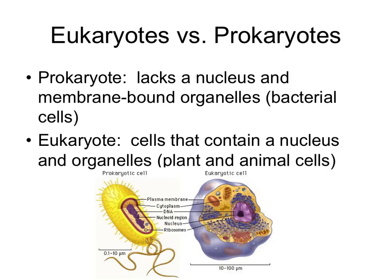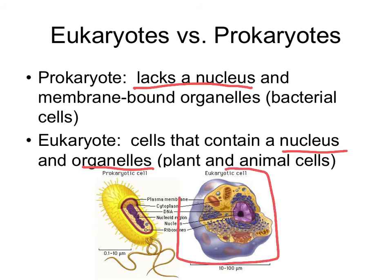Now we transition to eukaryotes. Prokaryotes like bacteria lack a nucleus and do not have membrane-bound organelles, making them a much simpler cell. Eukaryotes, on the other hand, have a nucleus and organelles. Inside a eukaryotic cell, there are a lot more structures, and that's because it has a nucleus, organelles, and is more complicated than a prokaryote.